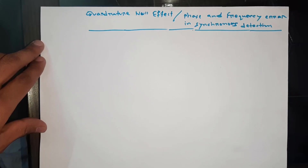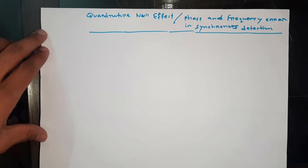Hello, my name is Quadrate Null Effect Chompra. In the Conviction System, there is a frequency and phase error. The commercial system is basic to start with step-by-step.